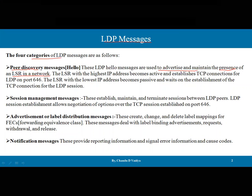The LSR with the highest ID — that is the highest IP address — becomes active and establishes the TCP connection for LDP on port number 646. Similar to BGP, there is a concept of active and passive, where the router whose ID is highest initiates the process. The LSR with the lowest IP address becomes passive and waits for the establishment of the TCP connection for the LDP session.